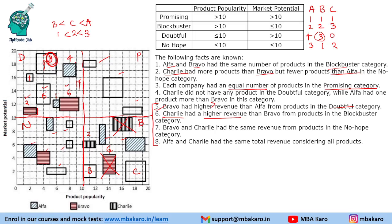Bravo and Charlie had the same revenue for No Hope products. Bravo has one No Hope product worth 4 units. Charlie needs two products totaling 4 units as well. One product is compulsorily Charlie's, while the other may go to alpha or charlie — but either way, Charlie's revenue in this category equals Bravo's at 4 units.